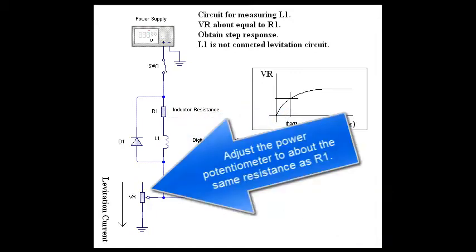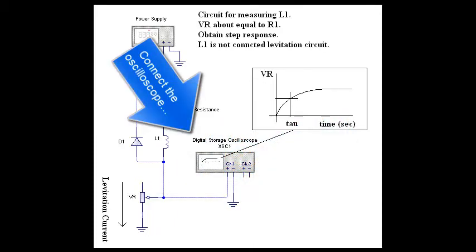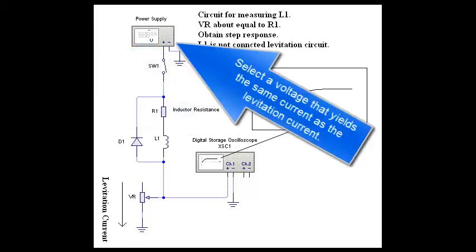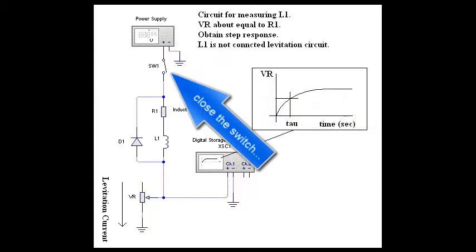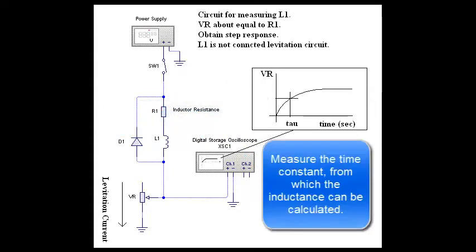Adjust the power potentiometer to about the same resistance as R1. Connect the oscilloscope. Select a voltage that yields the same current as the levitation current. Close the switch. Capture first-order step response. Measure the time constant from which inductance can be calculated.